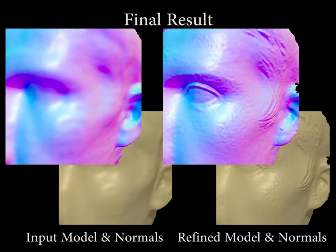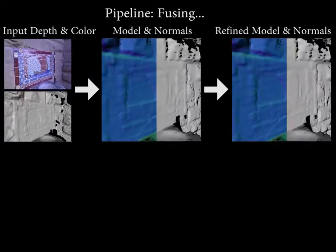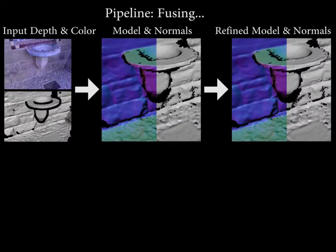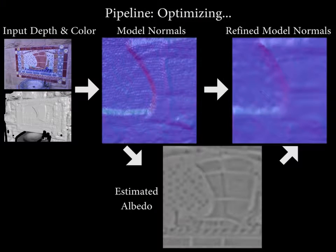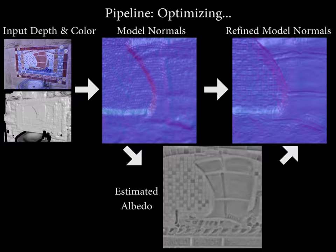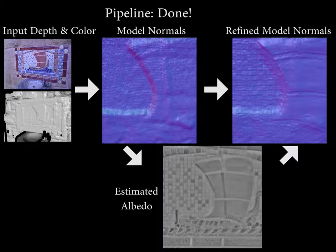Our method takes RGBD data as input and first obtains an initial truncated signed distance field model. Once integration is finished, we jointly optimize for surface reflectance and the refined geometry. Note that we use a hierarchy to aid the optimization.